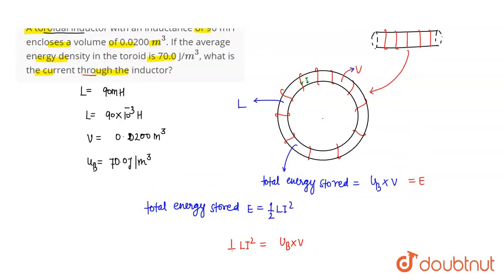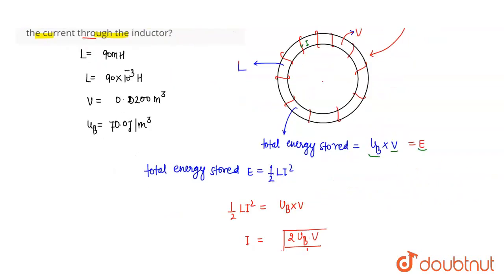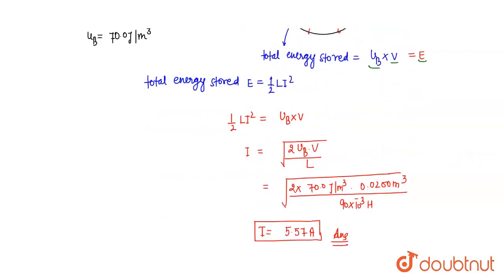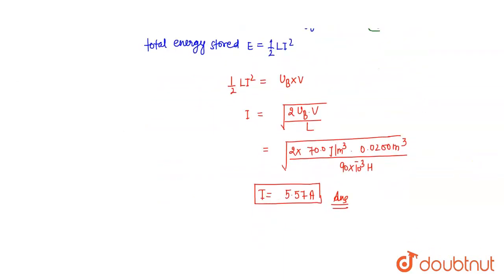So remember, if an inductor is given, you can simply find its total energy as ½LI². The key concept here is that average energy density and volume were given, so multiplying average energy density by volume gives the total energy inside the inductor, which equals ½LI², and from there you can find the value of I. Thank you.